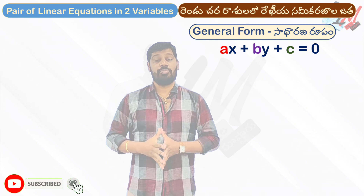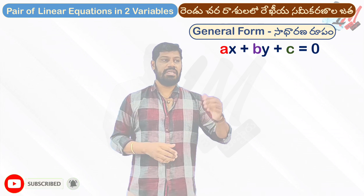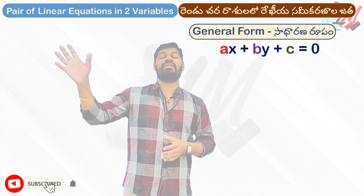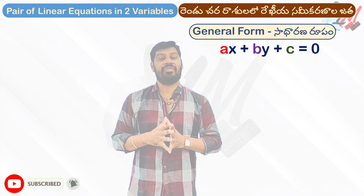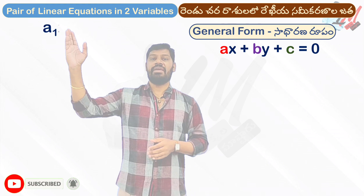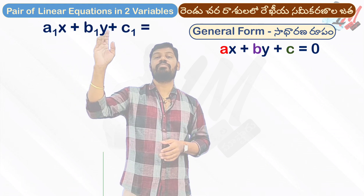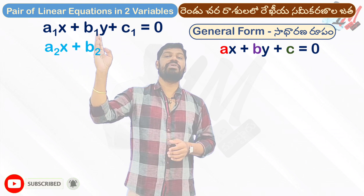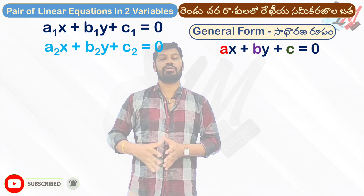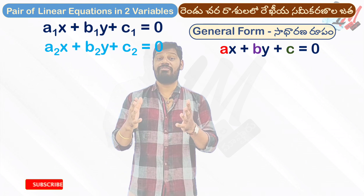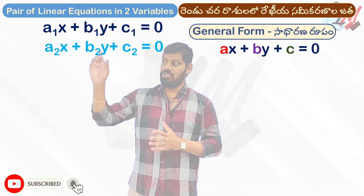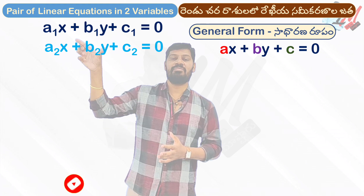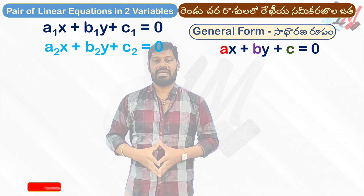There are two equations. In general form, we have a pair of linear equations: a1x plus b1y plus c1 equal to 0, and a2x plus b2y plus c2 equal to 0. This is the general form of a pair of linear equations. We have a first equation and a second equation, and we have to observe these numbers.